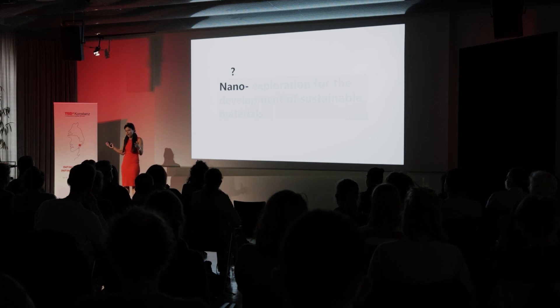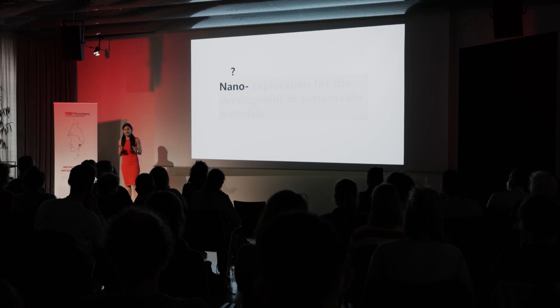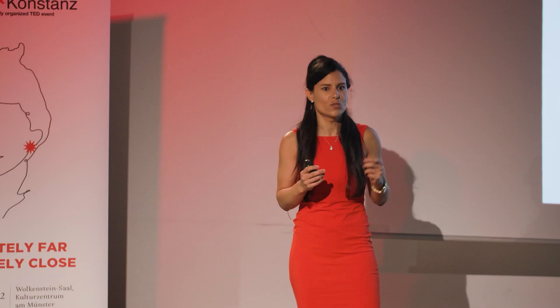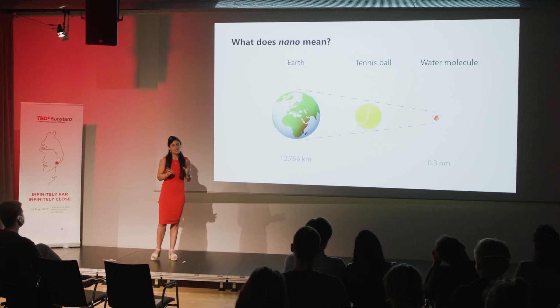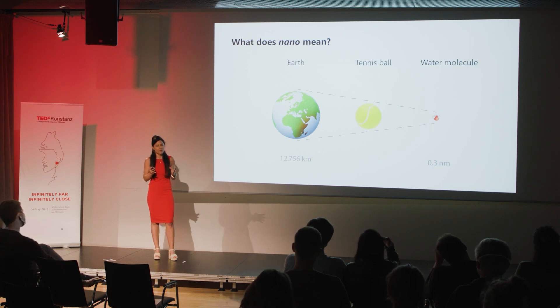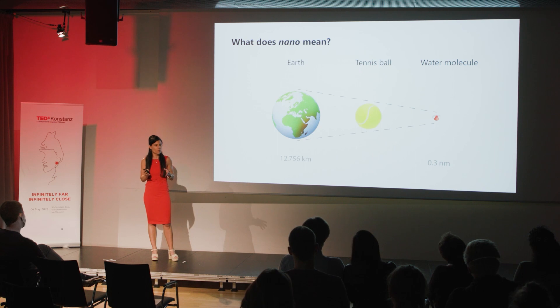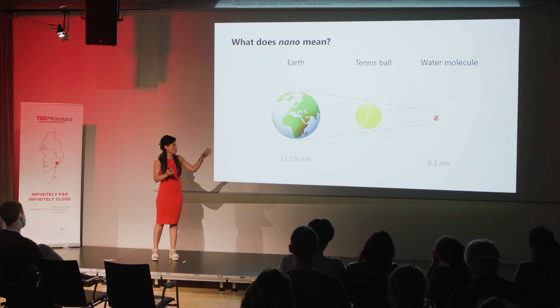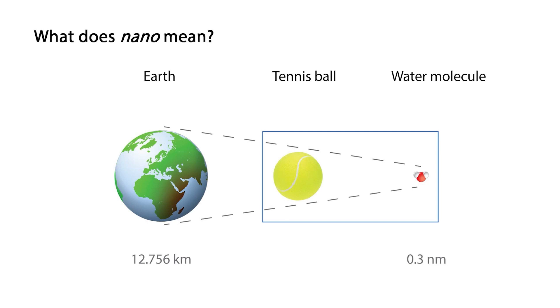Imagine you have a one meter ruler. You take this ruler and cut it into a thousand pieces — you have one millimeter. Then you cut that one millimeter again into a thousand pieces and you have one micrometer. Cut that again into a thousand pieces and you reach a nanometer. To put the nanoscale in a more understandable perspective, think of a water molecule, which has a size of 0.3 nanometers. This molecule is about as big in comparison to a tennis ball as the tennis ball is to planet Earth.